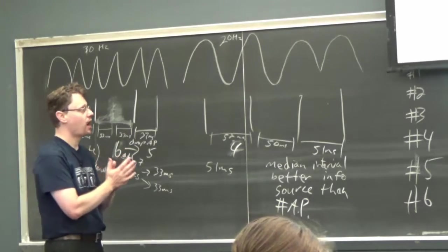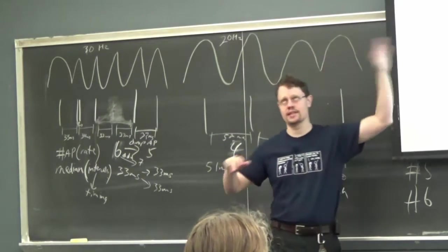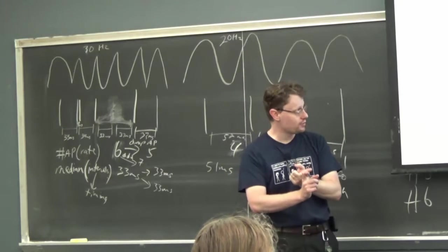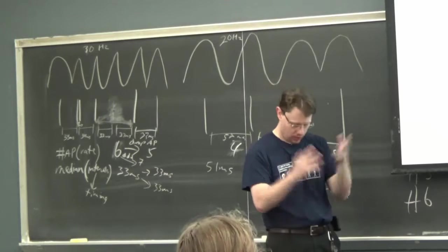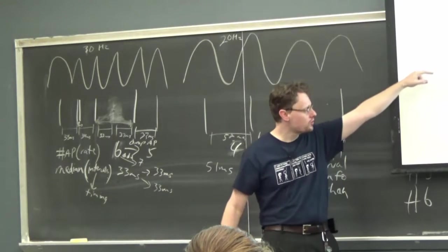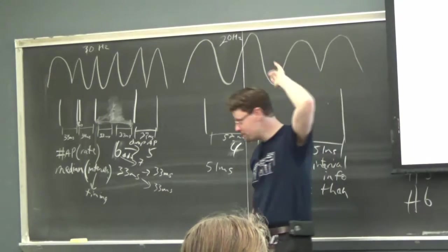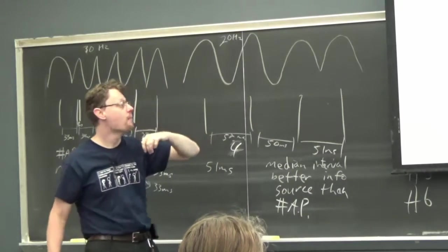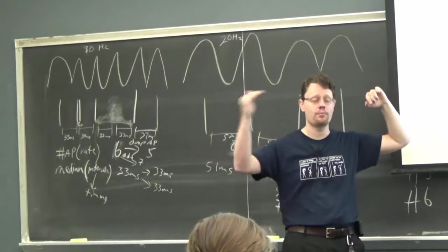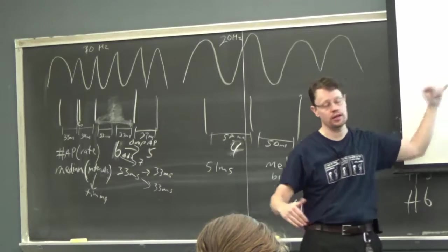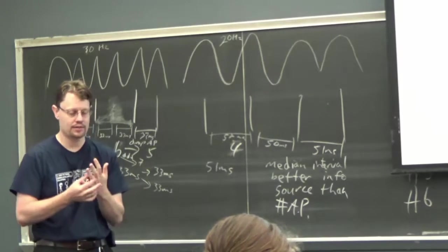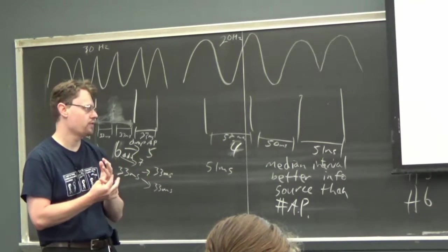To summarize: two coding strategies were considered — median time interval between spikes and average firing rate across the whole stimulus. The purely theoretical analysis showed that median interval is best and makes the fewest mistakes. But if you want to predict what the animal will actually do — not what's optimal — then you should be looking at firing rate. That hints that the animal is using firing rate as its primary source of information.